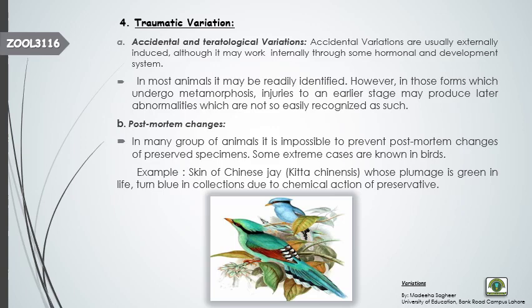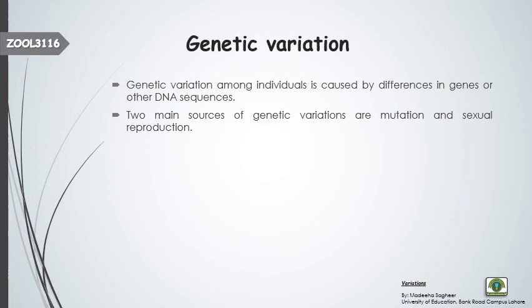Another type of traumatic variation is post-mortem variation — changes that take place after the death of an organism. 'Post' means after and 'mortem' means death. For example, the Chinese jay bird has green plumage when alive, but after preservation, certain chemical reactions with preservatives cause the plumage to turn blue. These variations are known as post-mortem variations because they were not present during the life stage but become visible after death.